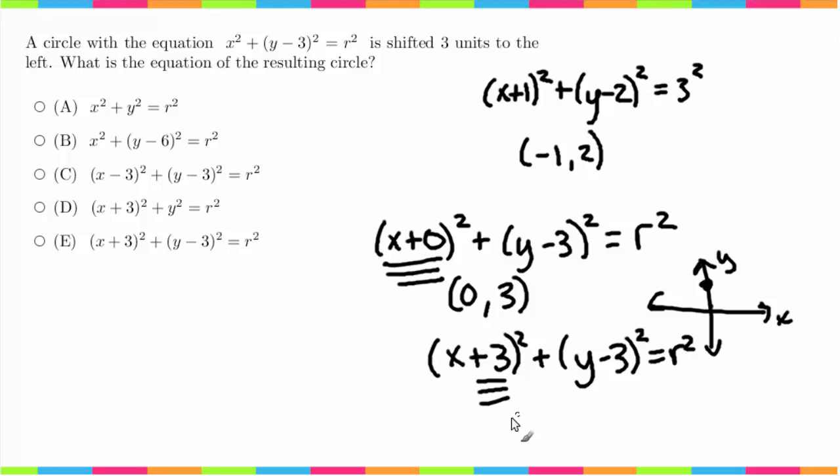So this here would make the vertex negative 3, 3. So the new point would be negative 3, which is 3 to the left, up 3. So it would be right there.